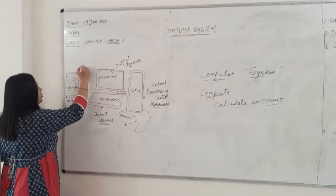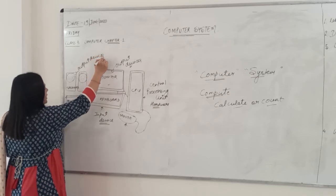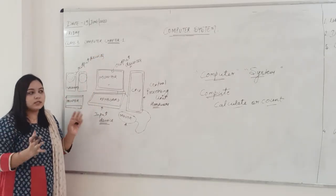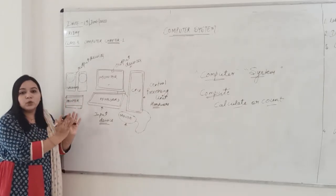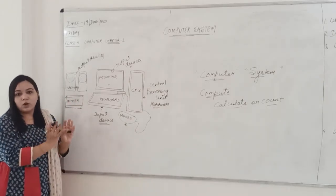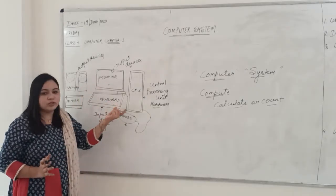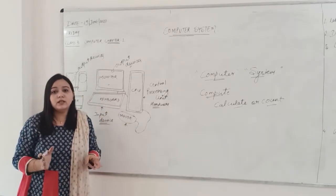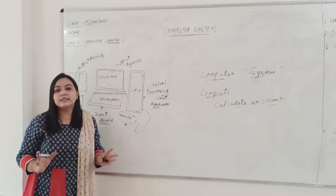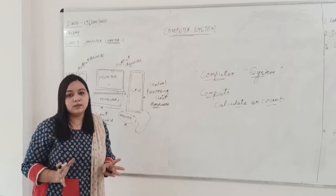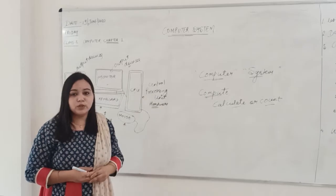These devices are also called components. When all these components are brought together, a computer system is formed. A computer is not just a monitor, or a keyboard, or a CPU — only when all of these are brought together is a computer system formed. So a computer is not a single machine; it is a system.